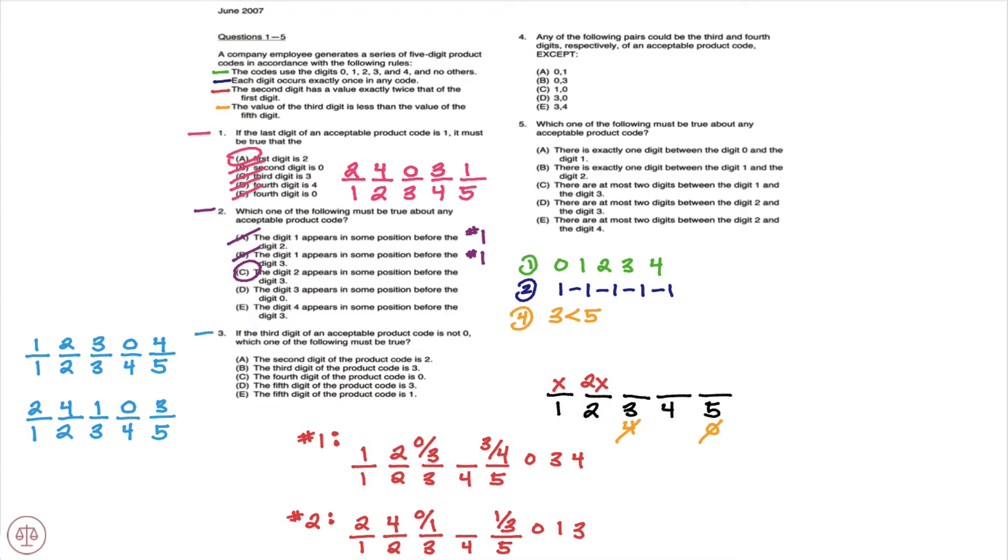And we're looking for what must be true. So let's take a look. A, the second digit of the product code is two. Well that's definitely possible in our first scenario. It doesn't have to be true because in scenario two, the second digit is four. So A is not necessarily true and A is out.